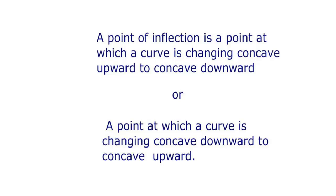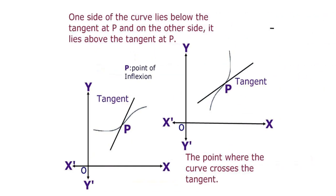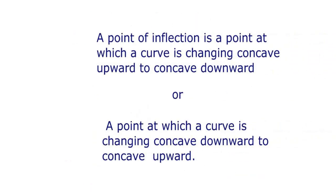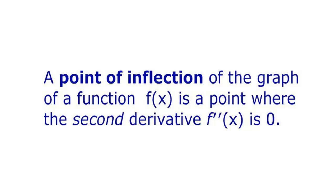A point of inflection is a point at which a curve is changing from concave downward to concave upward, or from concave upward to concave downward, as seen in the figures. In terms of derivatives, a point of inflection of the graph of f(x) is a point where the second derivative f''(x) is equal to 0. If the second derivative is 0 at that point, then we say that is a point of inflection.